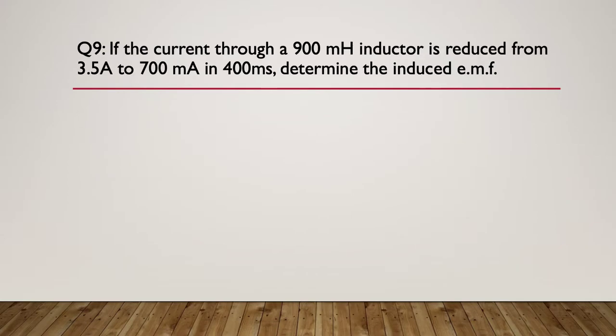Question 9: The current through a 9 millihenry inductor is reduced from 3.5 amps to 700 milliamps in 400 milliseconds. Determine the induced EMF. So we've got a change in current over a change in time. Can you remember the formula for calculating EMF?